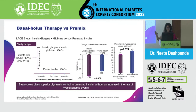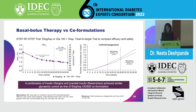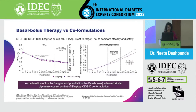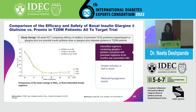Regarding co-formulations — though they are not by definition premix, the ratios are fixed. The STEP-BY-STEP trial compared IDegAsp or glargine 100 plus aspart in a treat-to-target trial to compare efficacy and safety. What they found was a combination of insulin glargine and prandial insulin — that is, basal bolus — achieved similar glycemic control as that of the co-formulation.